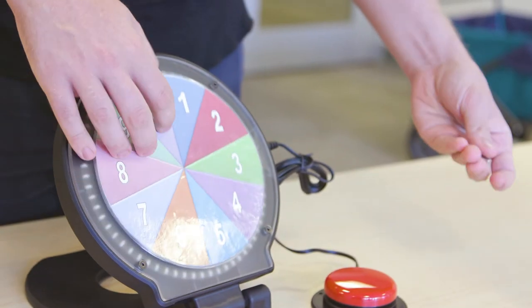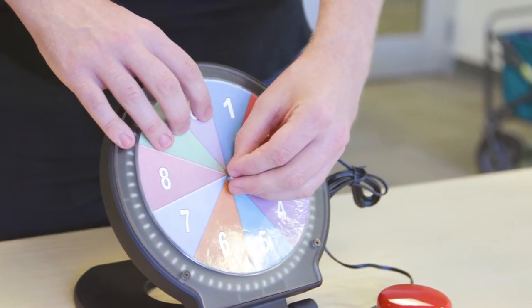Once you've selected a mode, you're ready to attach one of the overlay cards to the front of the spinner using the magnetic pin.